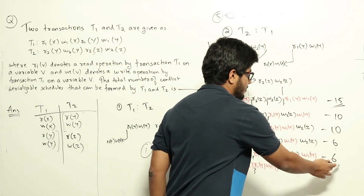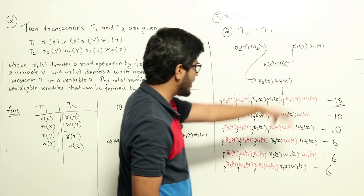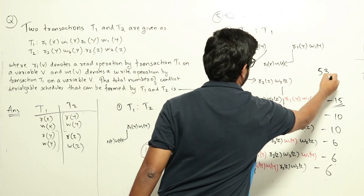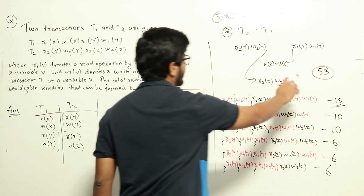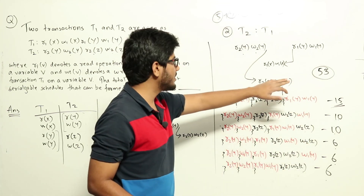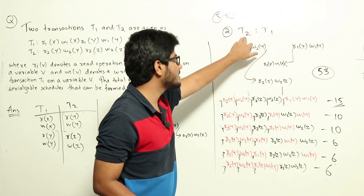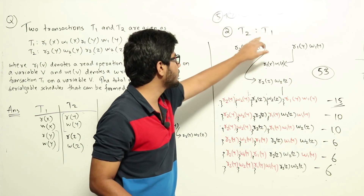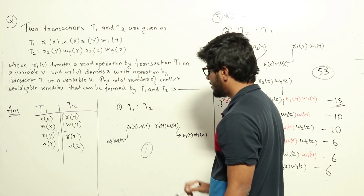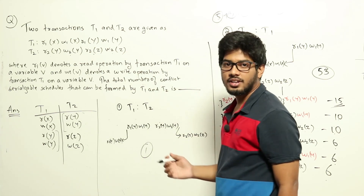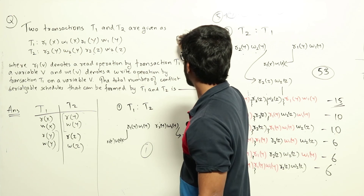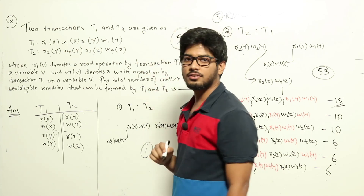Adding all possibilities: 15 + 10 + 10 + 6 + 6 + 6 = 53 schedules conflict serializable to the serial schedule T2→T1. For T1→T2 there was 1 schedule. So the total number of conflict serializable schedules is 53 + 1 = 54. The answer to this question is 54.